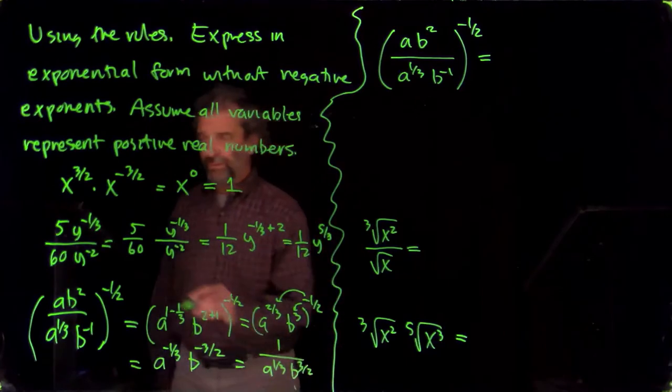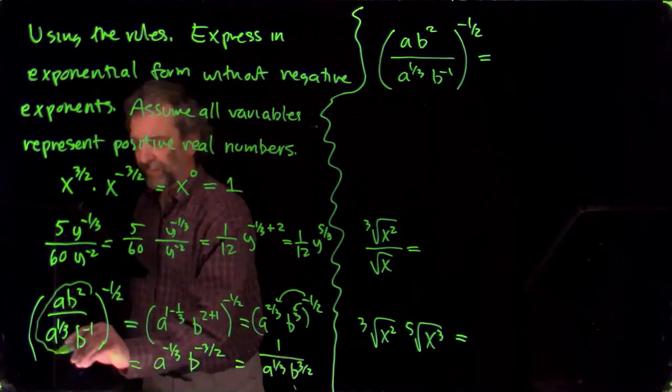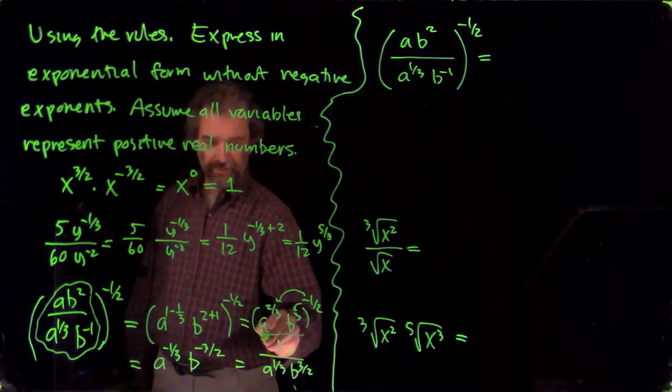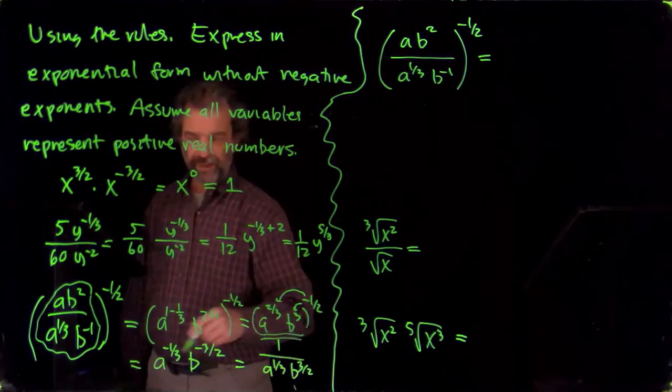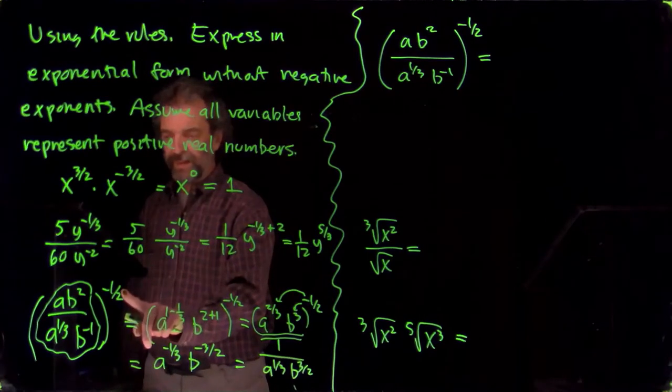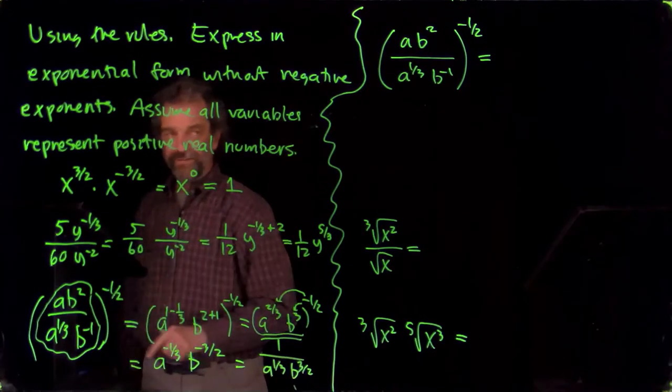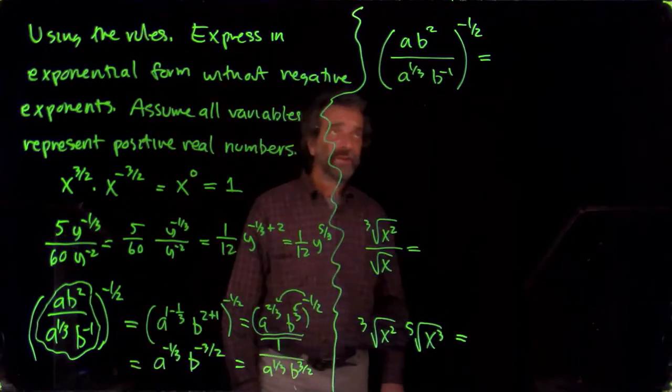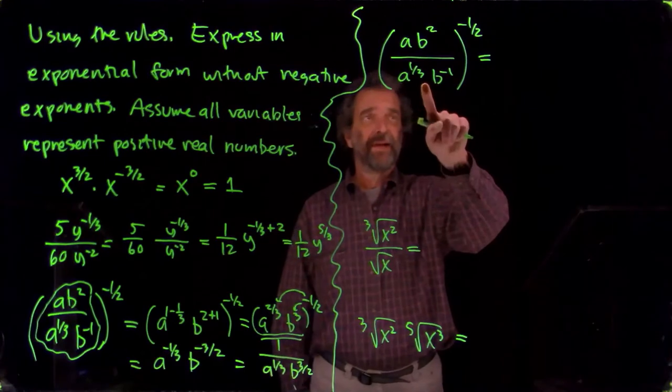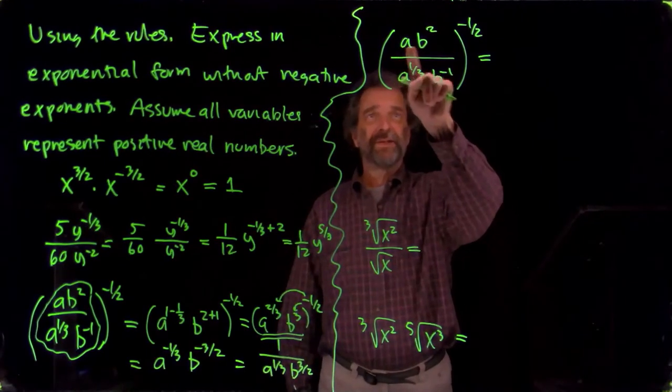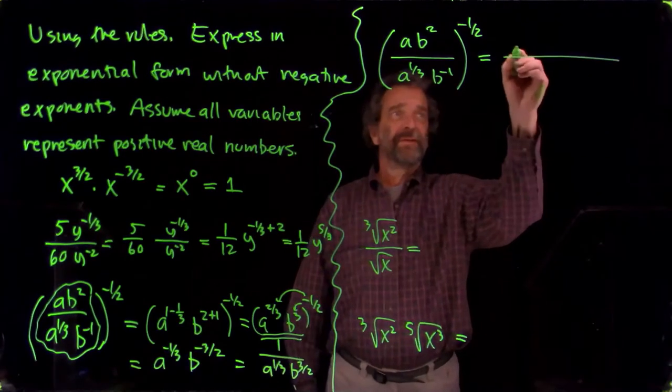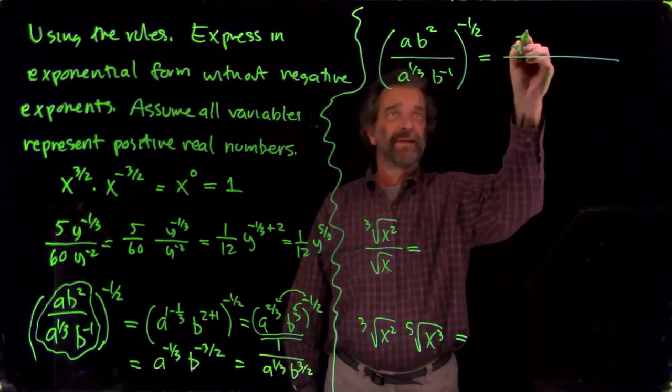So what we did there is we took the inside and we tried to simplify as much as we could until we can then use the exponent rules. And we have another approach is to use the exponent rule immediately and distribute this minus one-half on all the factors. So that would be this to the minus one-half over that to the minus one-half. And that raises each of these exponents, multiplies them by minus one-half.